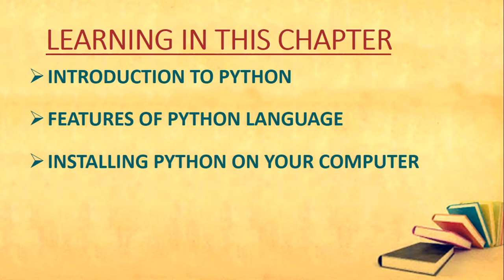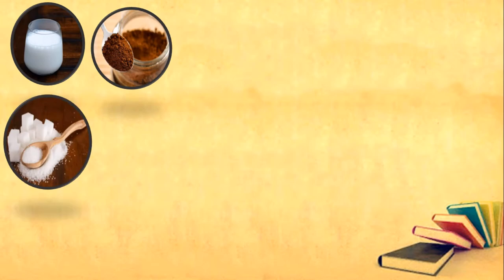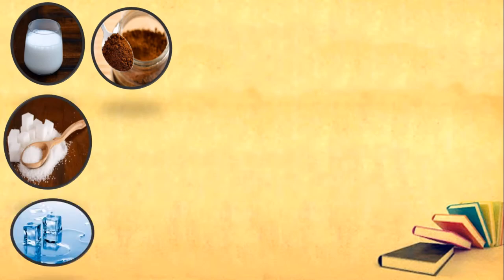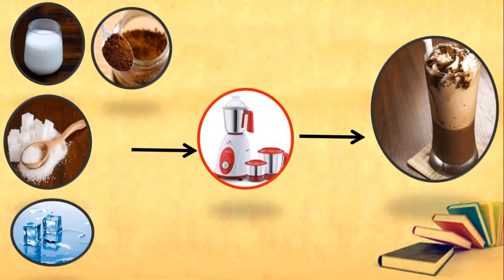Have you ever realized that to accomplish any task in your daily life you follow three steps: input, process, and output? For example, to make a cold coffee you follow these steps: take milk, coffee, sugar, and ice, put everything in a mixer jar, and switch on the mixer grinder to mix the ingredients.